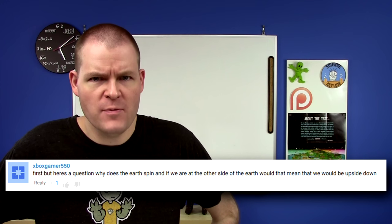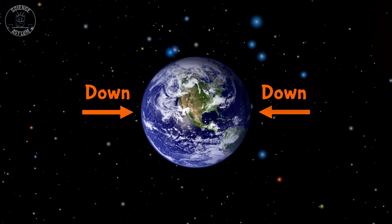If we were on the opposite side of the Earth, would that mean we were upside down? Technically, gravity defines down. So as long as that always points toward your feet, then you're right side up.